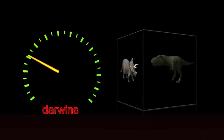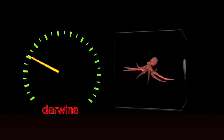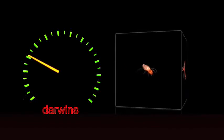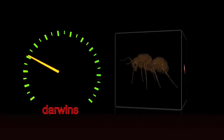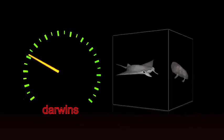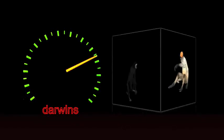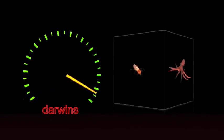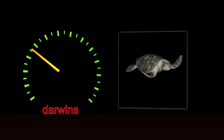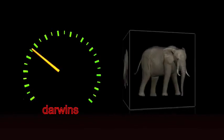So any rates faster than this in observations of evolution would ensure that there has been enough time. And the average rate of evolution observed in historical colonization events in the wild is 370 darwins, over 10 times the required minimum rate.